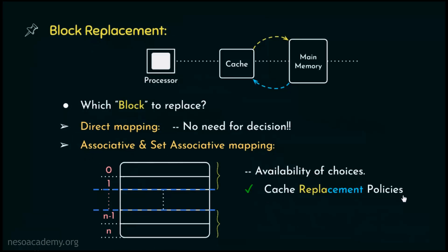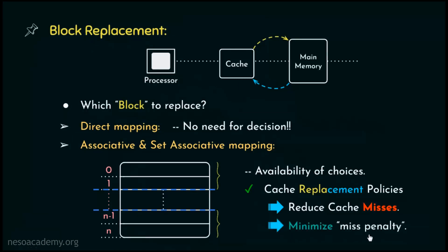Having cache replacement policies actually helps us reduce the cache misses. Since once the newly requested block is placed inside the cache, during its future reference it will be found inside the cache itself, resulting in a cache hit. This will also help minimize the miss penalty — the time required by the processor to get the data from the next level of memory hierarchy during cache misses. Therefore, with the reduced number of cache misses, the miss penalty is bound to be minimized. Cache replacement policies are required for associative and set associative mapping, not in case of direct mapping.